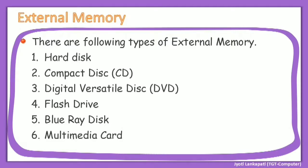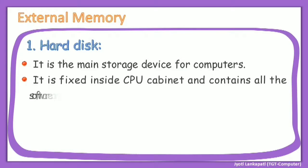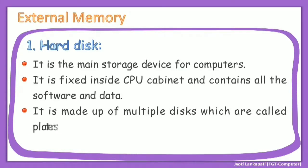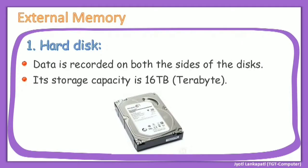Starting with the first one: hard disk. It is the main storage device for computers. It is fixed inside the CPU cabinet and contains all the software and data — Word, Excel, PowerPoint, Paint, WordPad, and Notepad are all saved on the hard disk. It is made up of multiple disks called platters. Data is recorded on both sides of the disk, and its storage capacity is up to 16 terabytes.